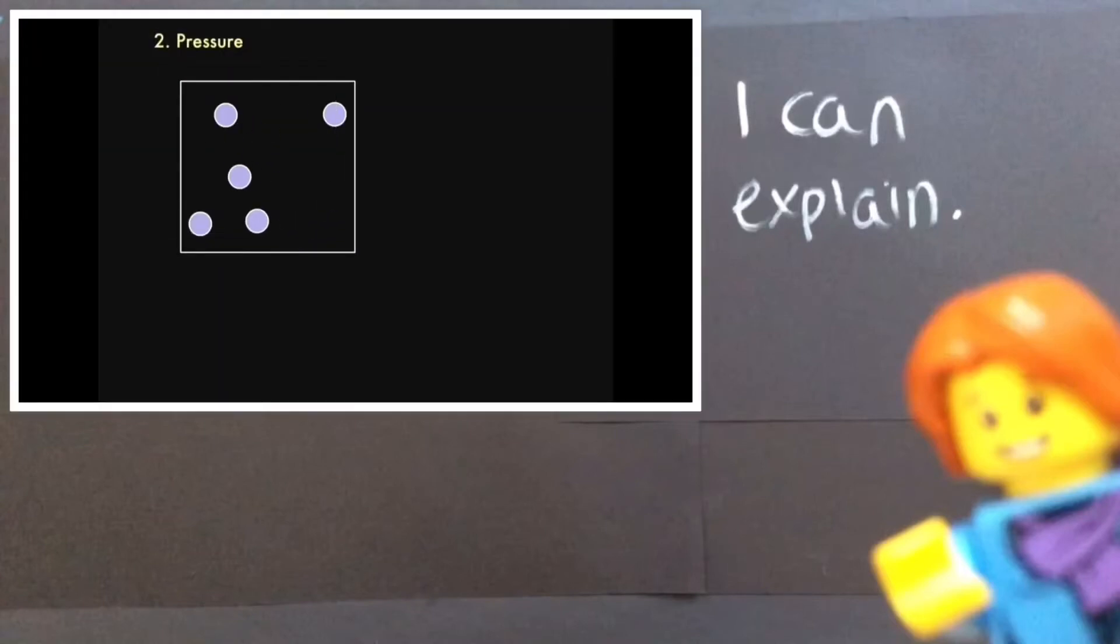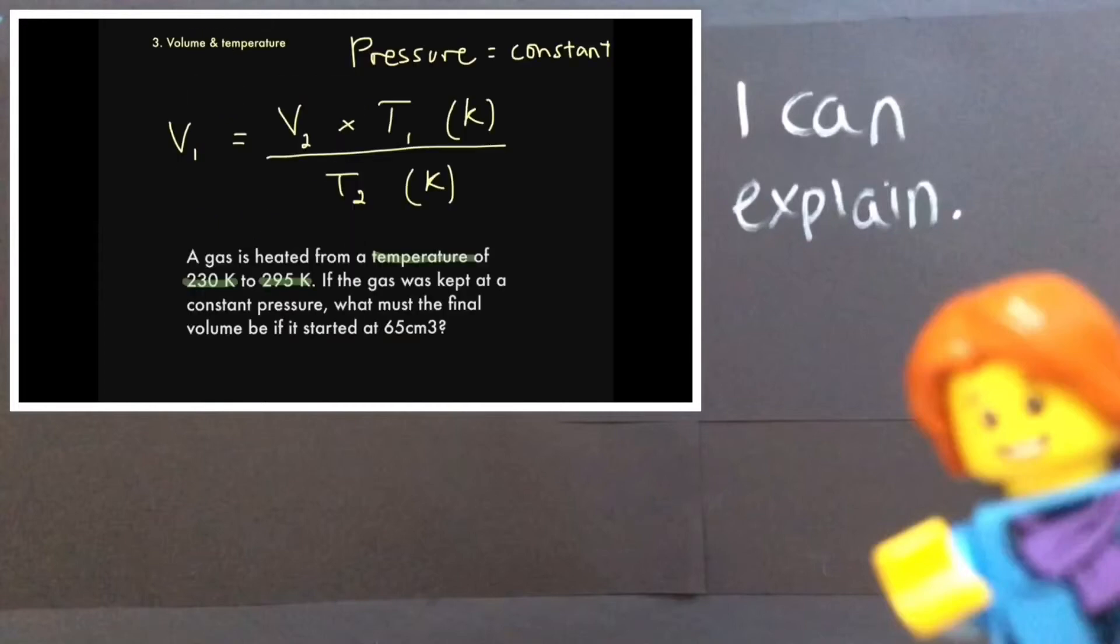Depending on how much energy they have, as they move they're going to hit the sides of the box every now and then and make contact with it. And we've also got a volume of 65 cm cubed. And next thing is to decide what's what. So the gas heated from a temperature of 230 to 295. So the first temperature must be the initial and this must be the second.